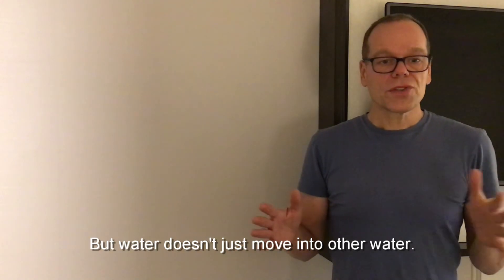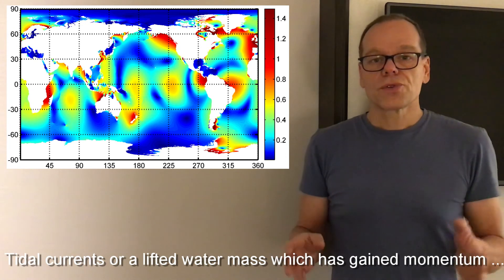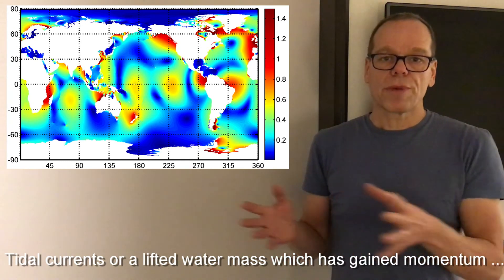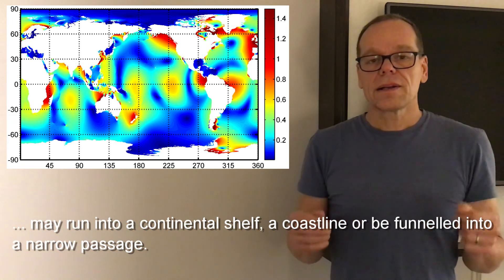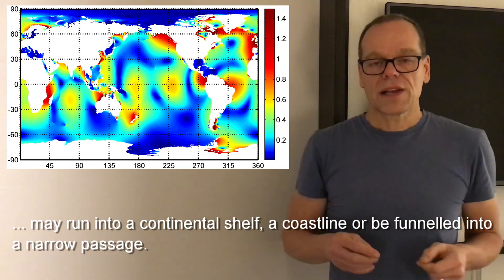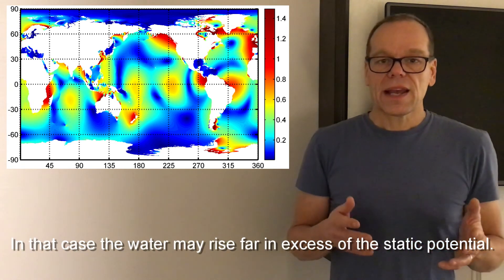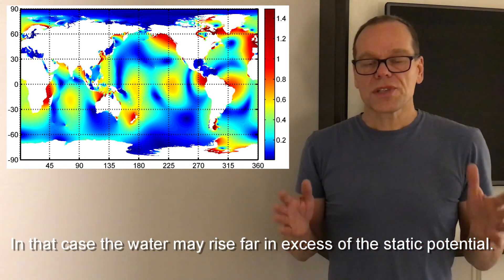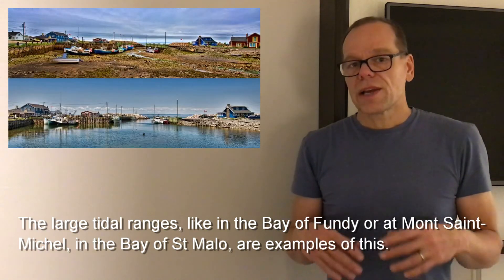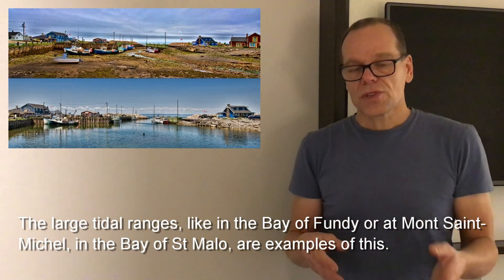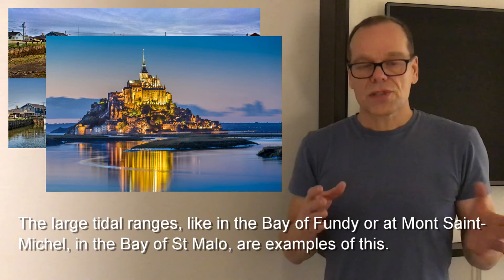But water doesn't just run into other water. Tidal currents, or a lifted mass which has gained momentum, may run into a continental shelf, up a coastline, or be funneled into a narrow passage. In that case, the water may rise far in excess of the static potential. Tidal ranges like in the Bay of Fundy, or at Mont Saint-Michel in the Bay of Saint-Malo are examples of this.